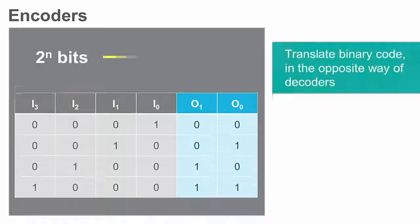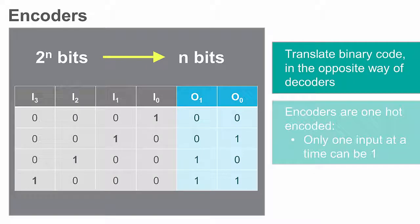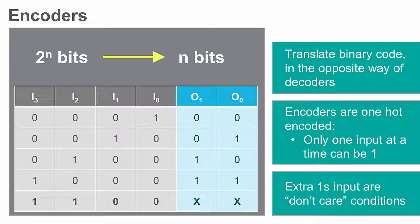Encoders perform the opposite function of a decoder. Binary encoders encode information from 2 to the n input lines to an n-bit output line. They are also one-hot encoded. If more than one input has a value of 1, the truth table treats the surplus as don't care conditions.